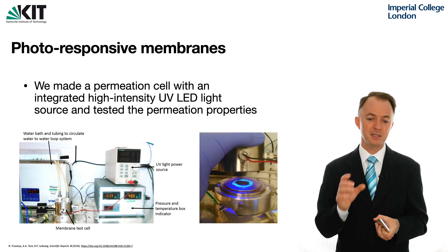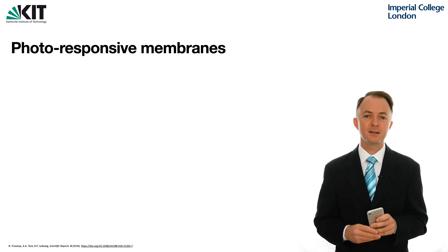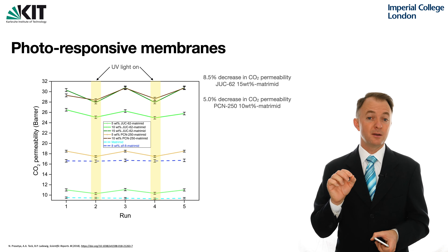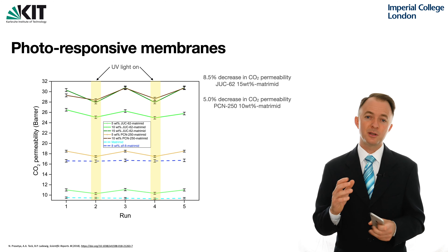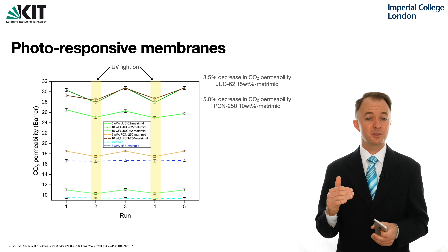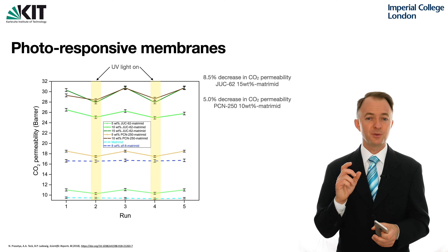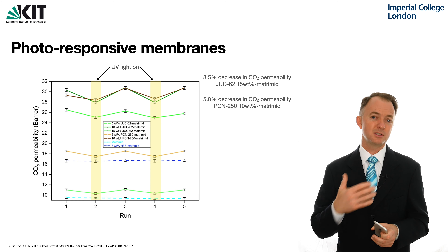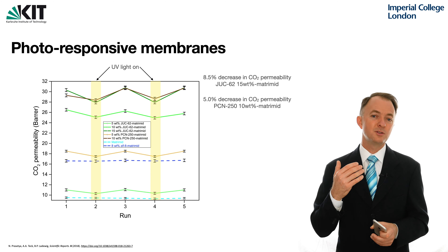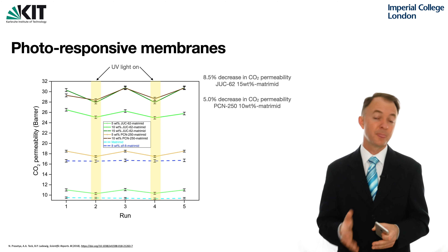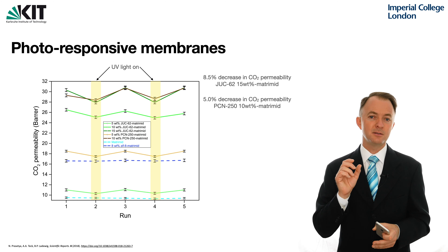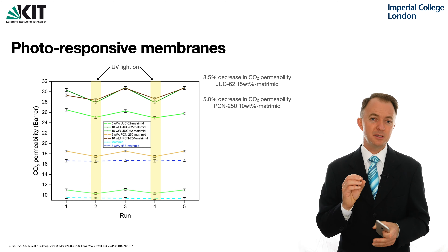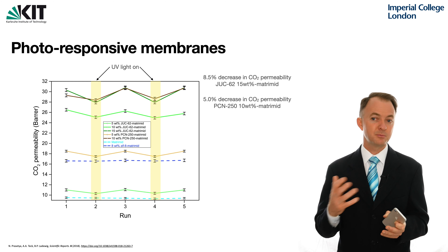The photo shows one of the membranes inside the housing — the membranes are glued onto a metal disc and held inside there. The results were quite interesting. When we cast these membranes the highest we could go to was about 15 weight percent for JUC62 and 10 weight percent for PCN250. For those membranes, when we conducted repeated on–off CO2 permeation tests — single gas permeation to measure CO2 permeability — we saw a consistent and statistically significant reduction in CO2 permeability when the light was turned on, which is what you would expect since illumination causes these materials to desorb up to 40–50 percent of their adsorbed CO2.